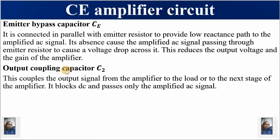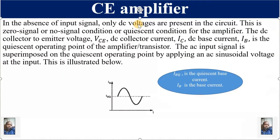C2 is the output coupling capacitor. It couples the AC signal from the collector to the output load resistor, and it blocks DC — thus passing only the amplified AC signal. We will now revisit the Q-point. When there is no input signal at the base of the single stage amplifier transistor, only DC voltages are present and no AC signal is present — this is called the zero signal, no signal, or quiescent condition for the amplifier. The transistor is at rest.